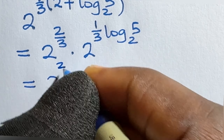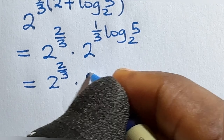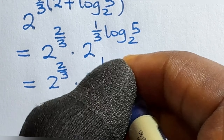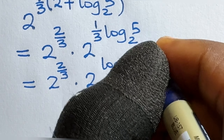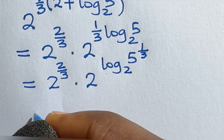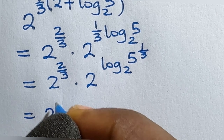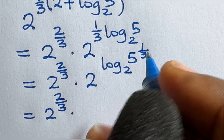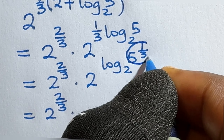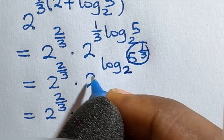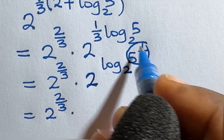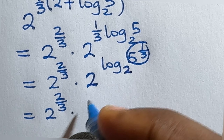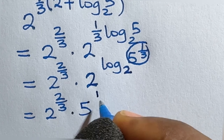This equals 2 raised to power 2 over 3 times 2 raised to power log base 2 of 5 to the one-third. This whole expression simplifies: since the base here is 2 and the log base is also 2, the law of logarithms says the answer for that term is 5 raised to power one-third. So we have 2 raised to power 2 over 3 times 5 raised to power one-third.